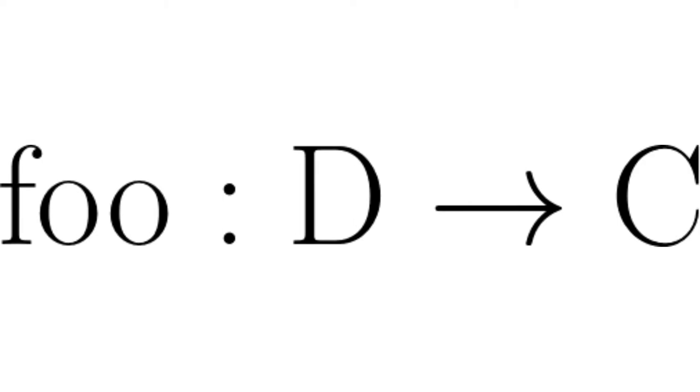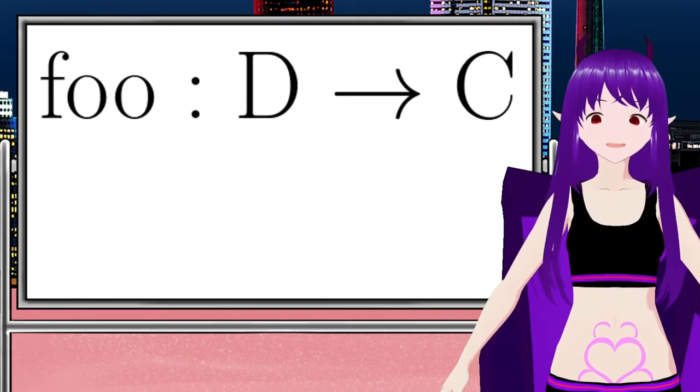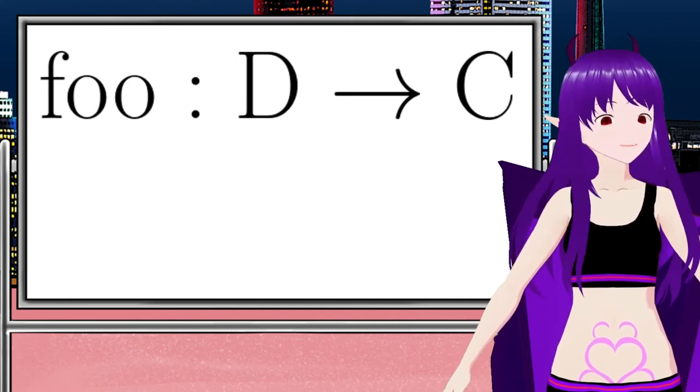what the domain is, then an arrow, and then the codomain. And we read this signature as foo takes D to C.